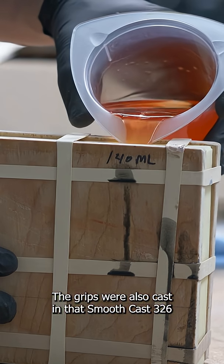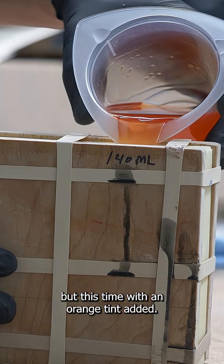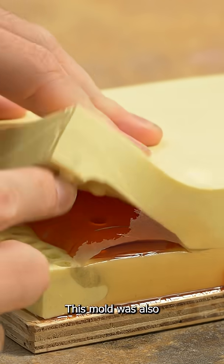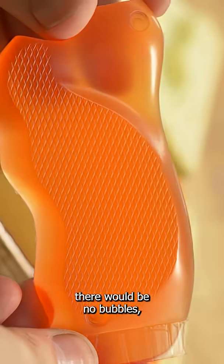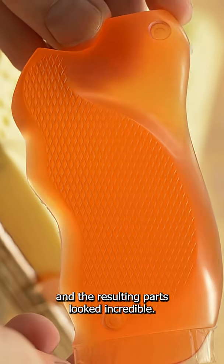The grips were also cast in that Smooth Cast 326 but this time with an orange tint added. This mold was also pressure cast to ensure there would be no bubbles and the resulting parts looked incredible.